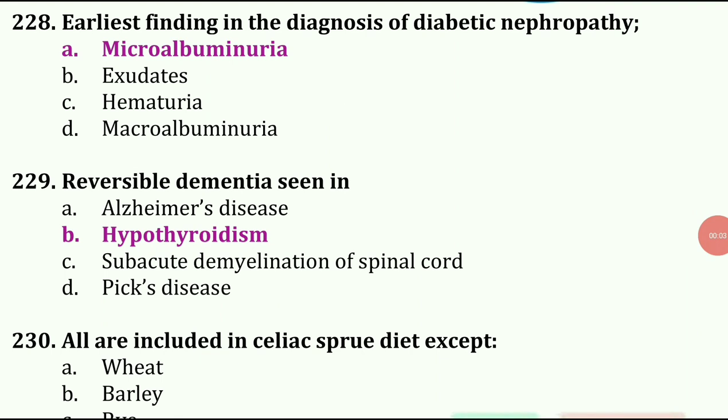Earliest finding in the diagnosis of diabetic nephropathy — options are microalbuminuria, exudates, hematuria, and macroalbuminuria. The correct answer is microalbuminuria.